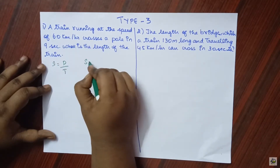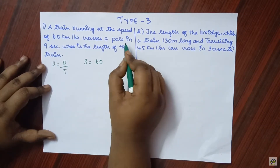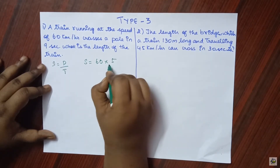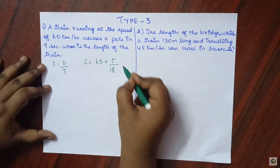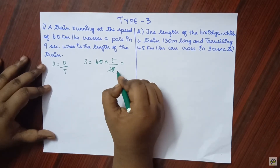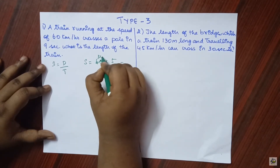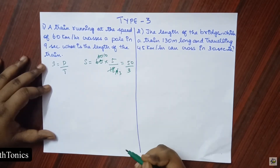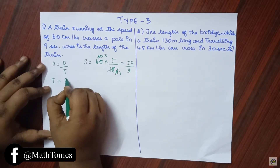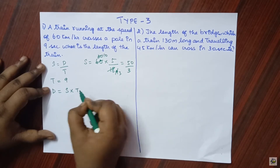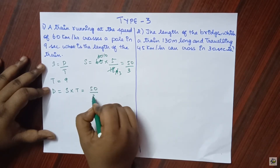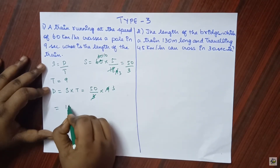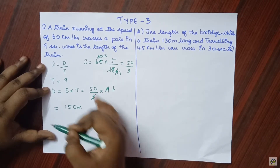The speed is given as 60 kilometers per hour but the time is given in seconds, so we need to convert to meters per second by multiplying by 5/18. After cancellation, we get 50/3 meters per second. Time is 9 seconds. So distance equals speed into time, which is 50/3 into 9. Cancelling, we get 150 meters. So the length of the train is 150 meters.